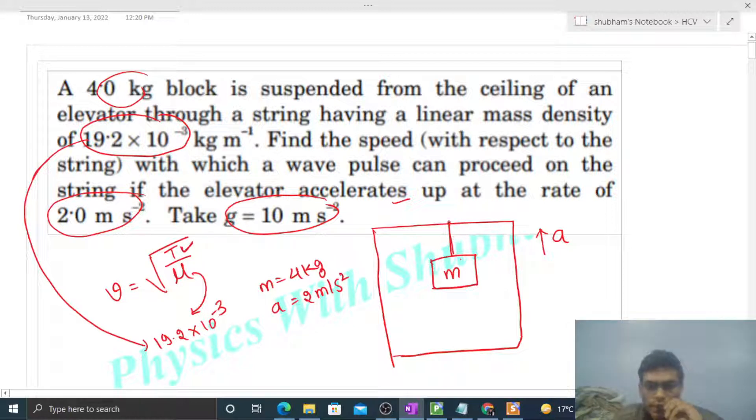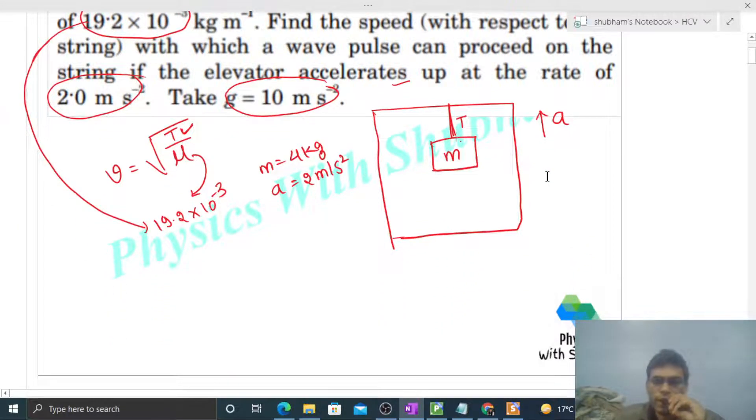To find that, we need to draw the free body diagram of this block. Where to draw it from? You can draw it from the inertial frame. Let's say we are standing on the ground and observing this block.